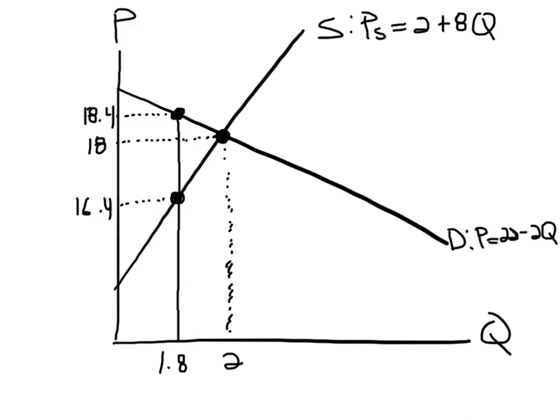We said in the previous video that the tax in this market is $2, and buyers actually pay $0.40 out of that tax, which is the difference between this area right here, and sellers end up paying $1.60 out of the tax, which is the area right here.